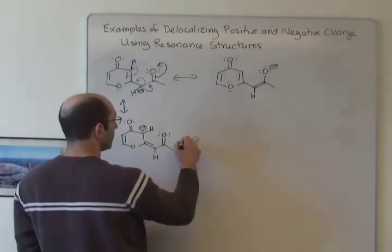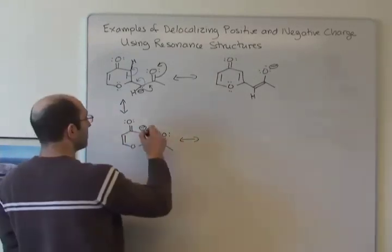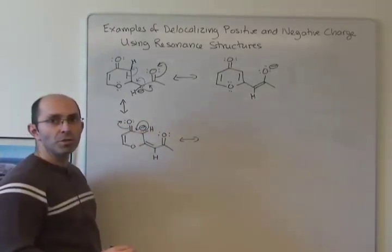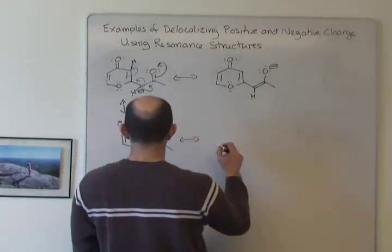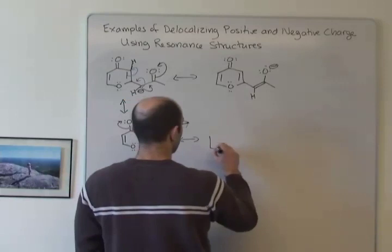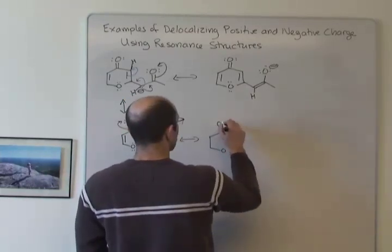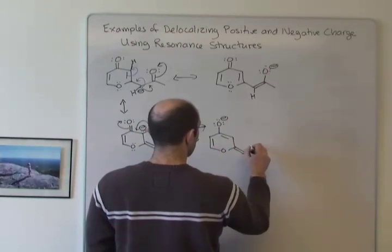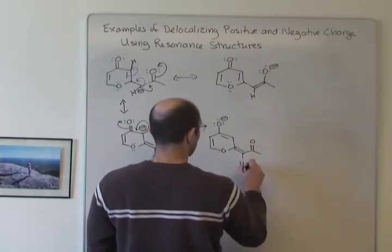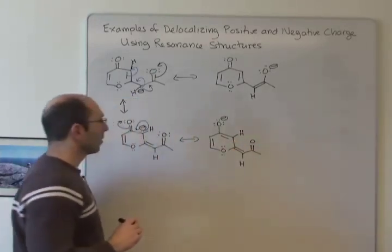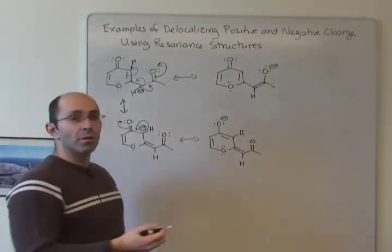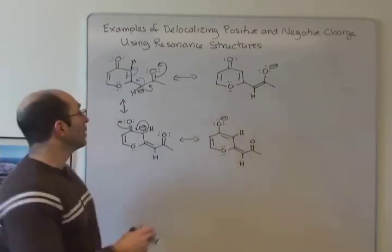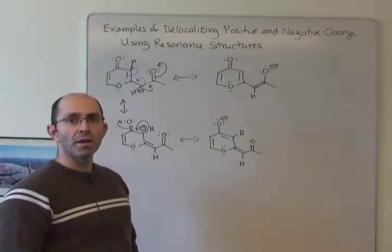We can continue to delocalize that charge because it's adjacent to a pi bond. So we can have those electrons form a new pi bond, and then the adjacent pi bond to the carbon-oxygen turns into a lone pair on oxygen. It turns out that if we try to delocalize these charges any more, we're going to end up violating octet rules. So these four structures are the only structures we can draw to delocalize that negative charge.